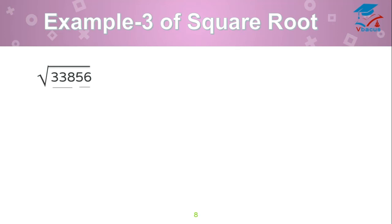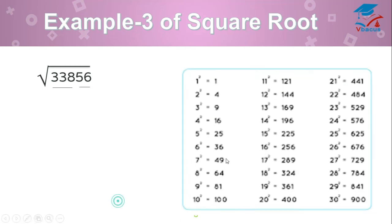There are 5 digits. Now, find the square root of 33856. Make it into 2 parts. Last 2 digits and remaining digits. So, 56. See the last digit in the chart. 6 lies here. And square root of 16 is 4. 6 lies here also, 36. Square root of 36 is 6. So, your answer in unit place will be either 4 or 6.